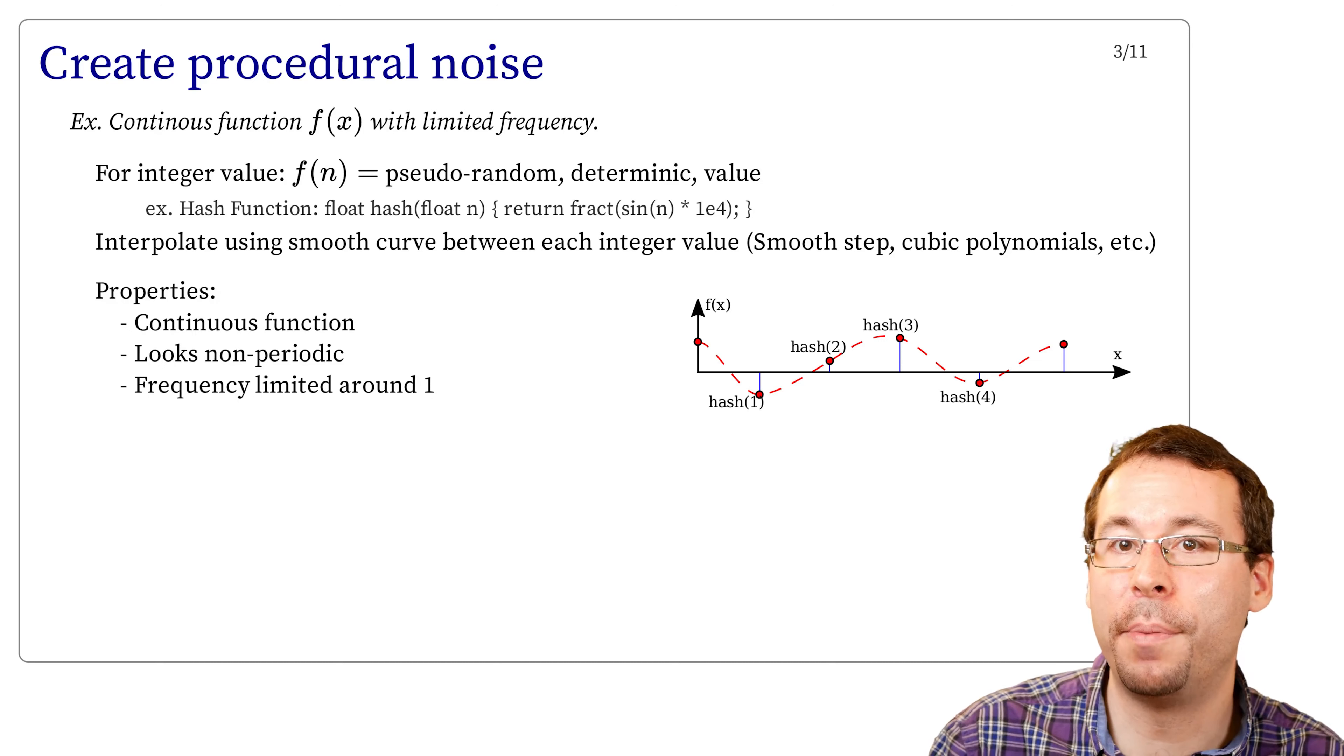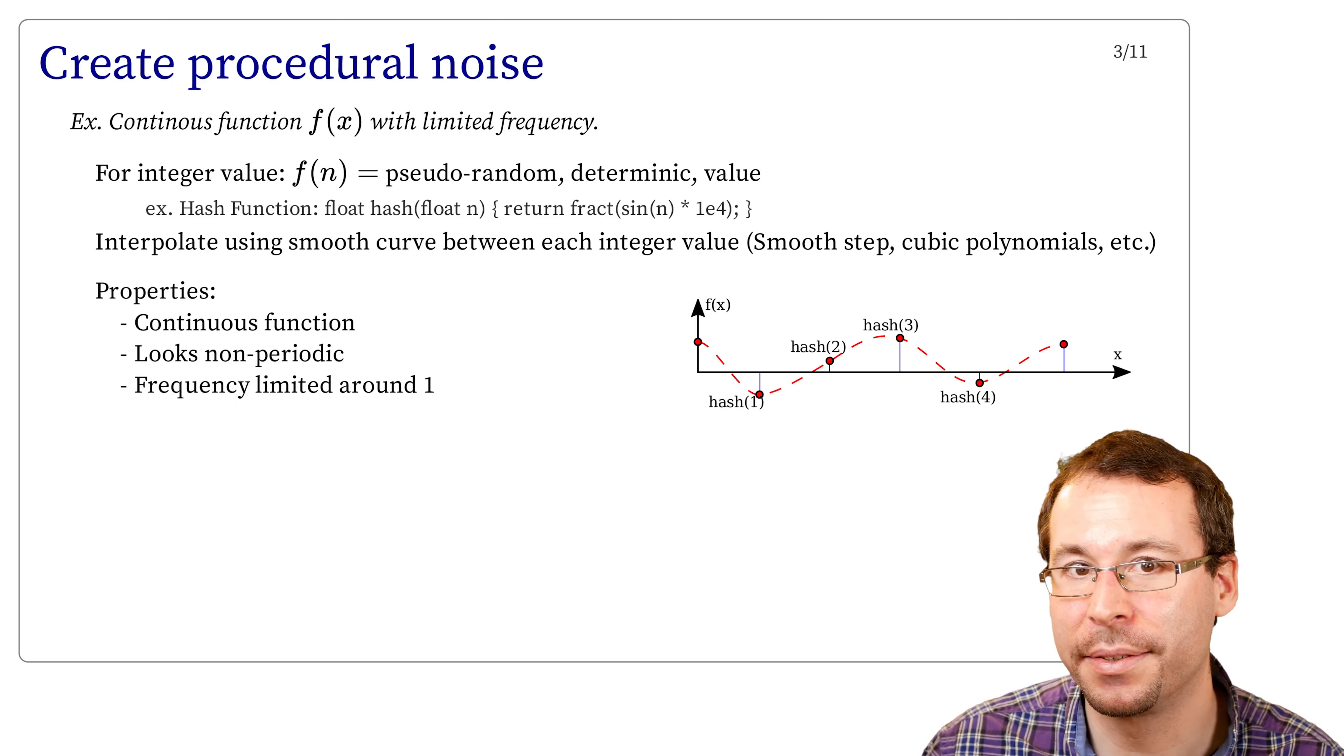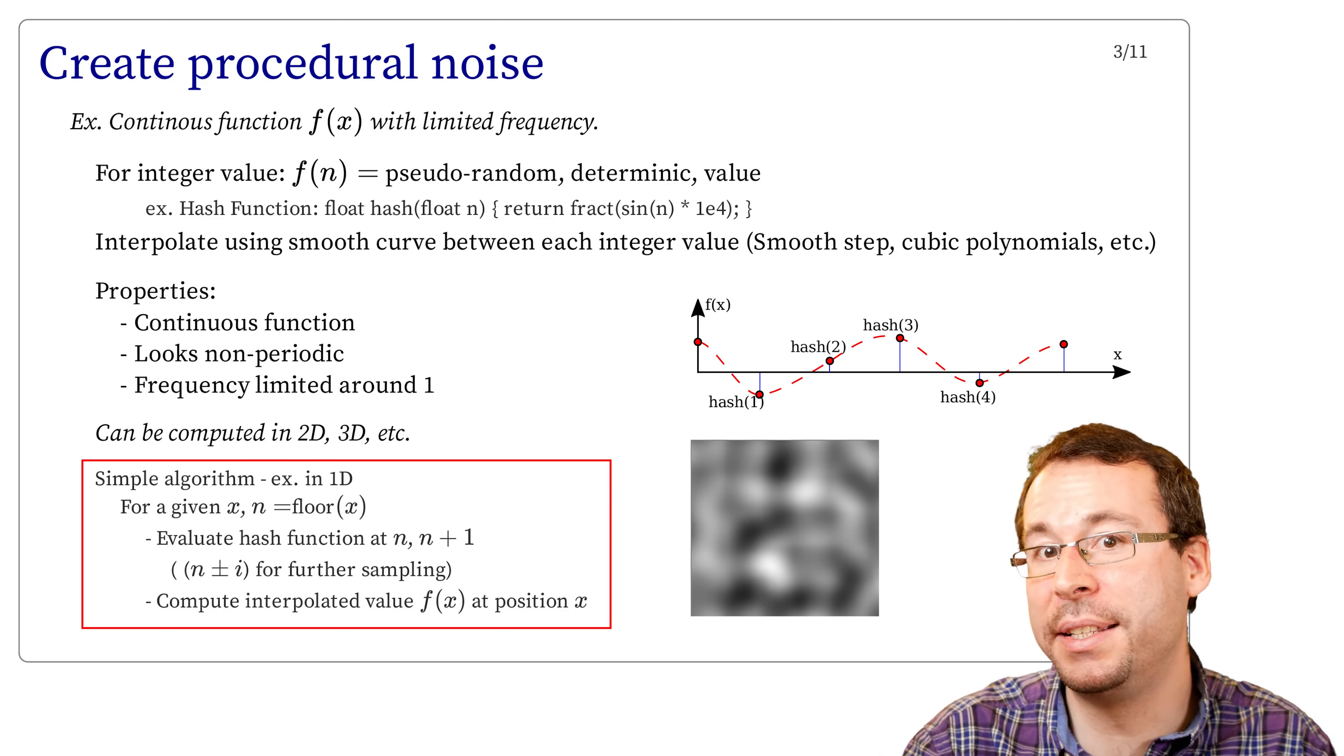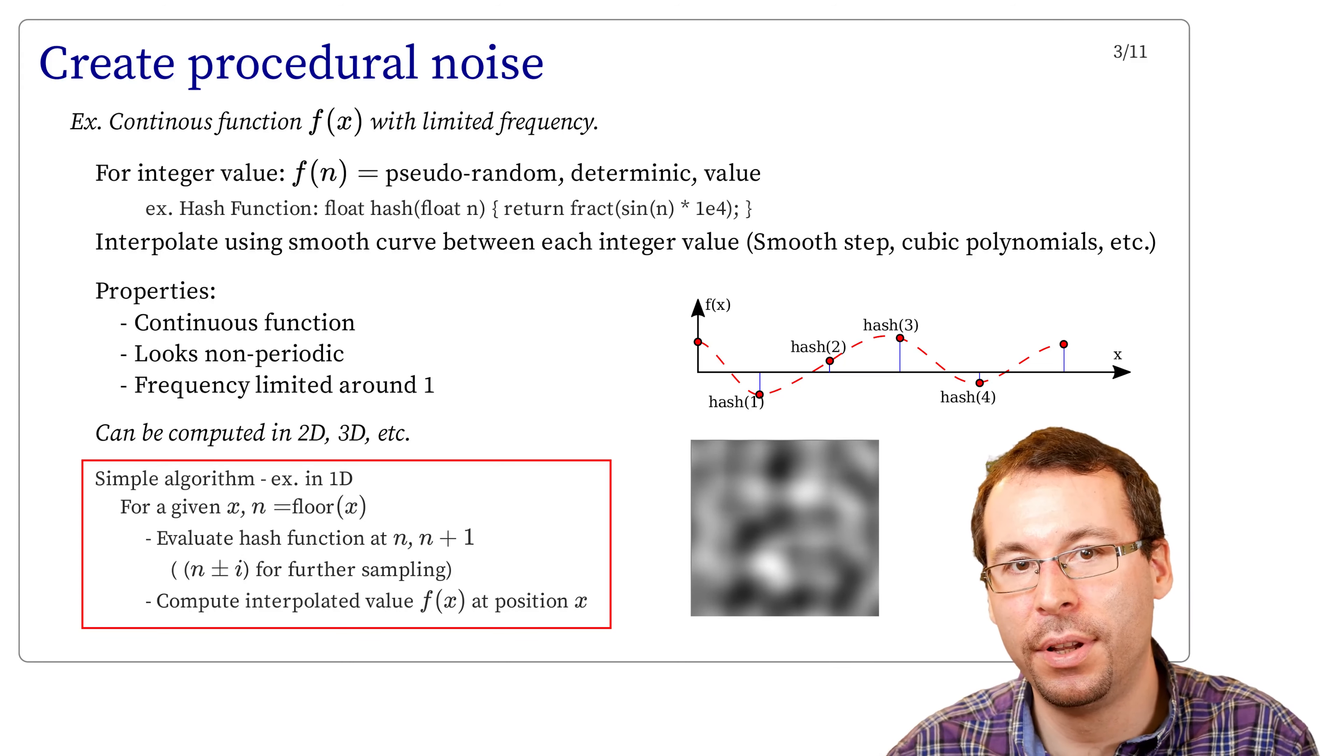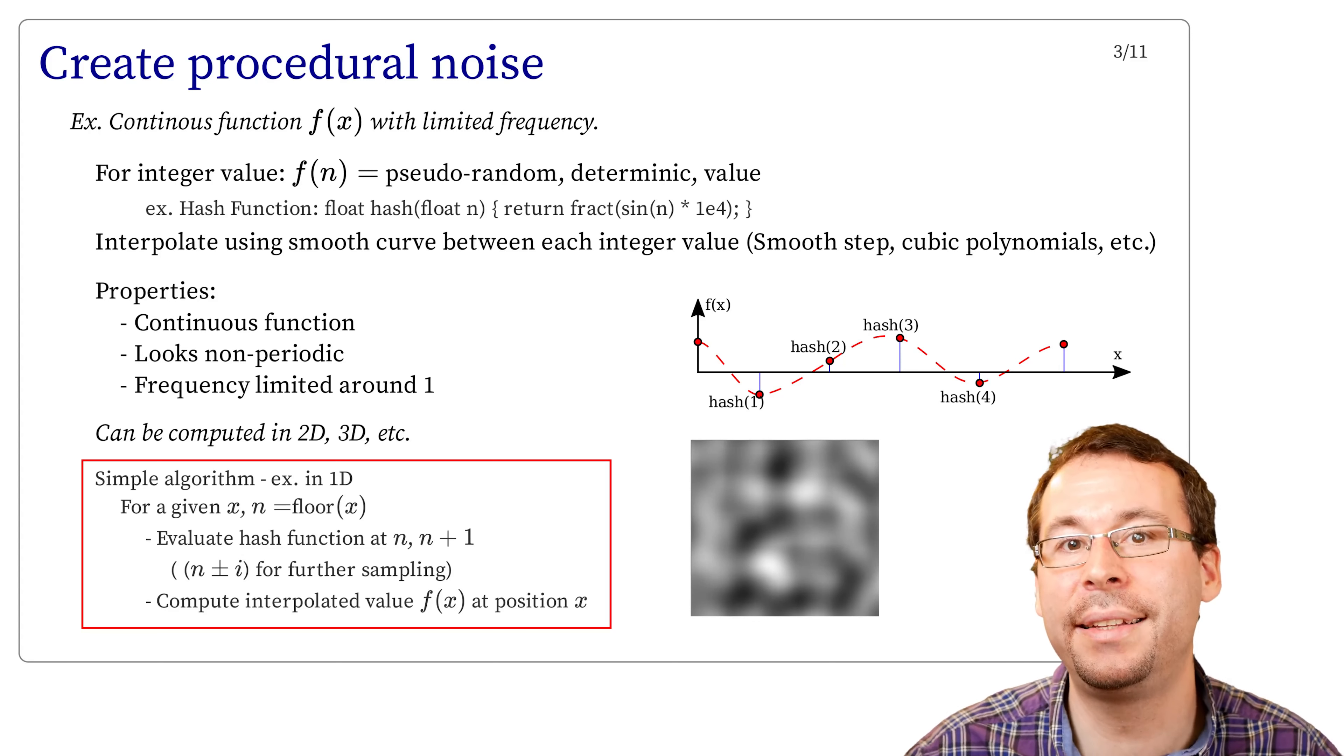Then to define a continuous function in the real domain, we smoothly interpolate the values between each integer, and we can use smooth steps or cubic polynomials, for instance. So this function has the following property to be a noise. It's a continuous function, it is deterministic, it looks non-periodic, and it has a frequency limited around 1 in this case. So this function can further be computed in 2D, 3D or any arbitrary dimension, and the algorithm to compute such function is pretty simple. For a given x, we compute the associated integer n value. Then we evaluate our hash function at n and n plus 1, or we can consider further neighbors if you want. And then we can compute the value f at position x using interpolation.